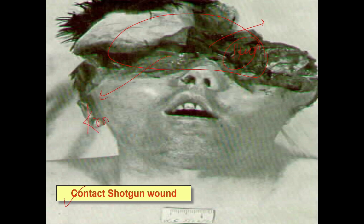In contact shotgun wounds, expansive gases create huge pressure causing burst-out fracture of the skull. In such cases, the brain may be found outside the skull cavity — this shot is known as the Cronline shot. These are the contact wounds characteristically seen causing burst-out fracture in hard contact wounds.